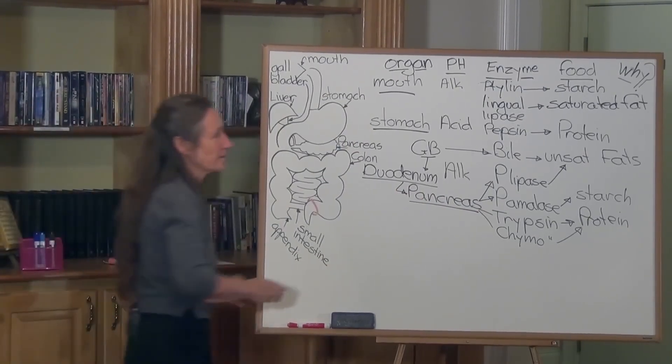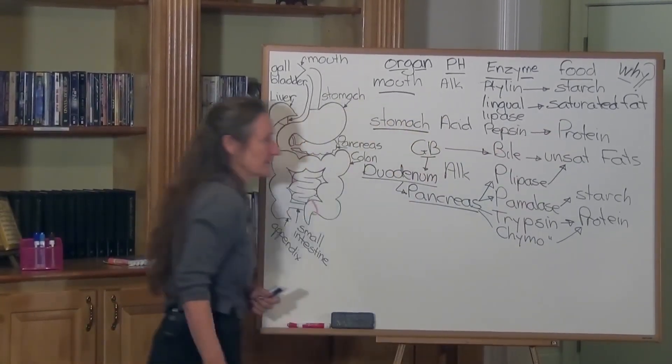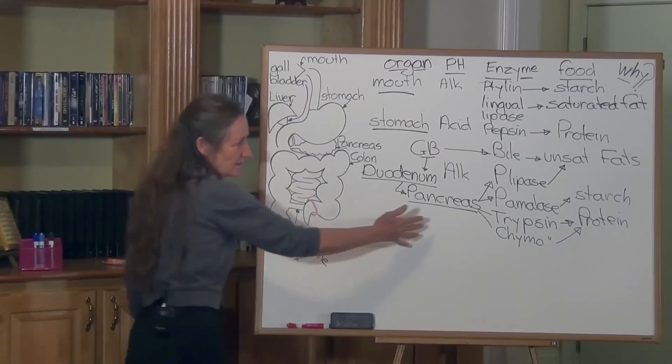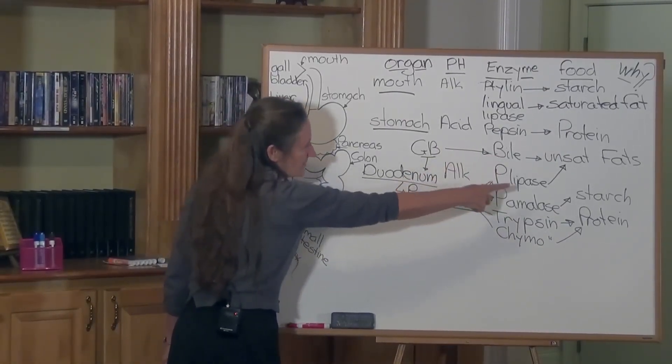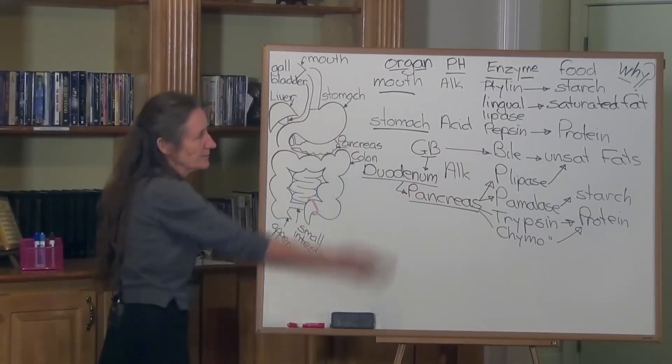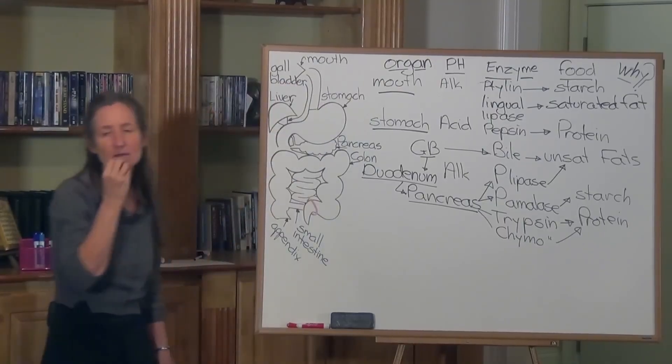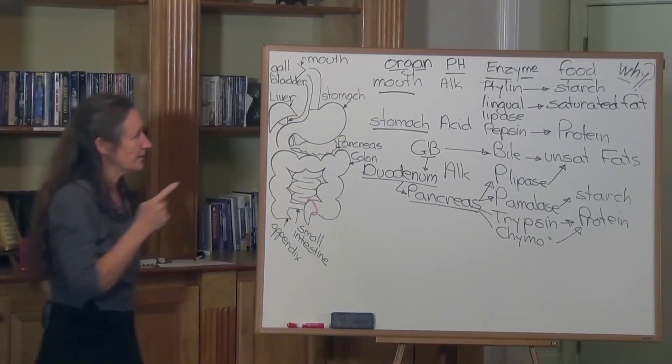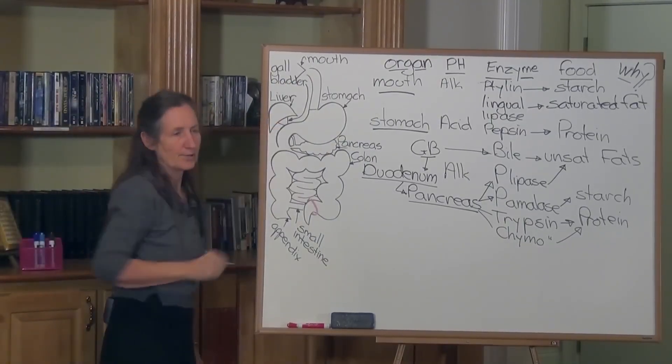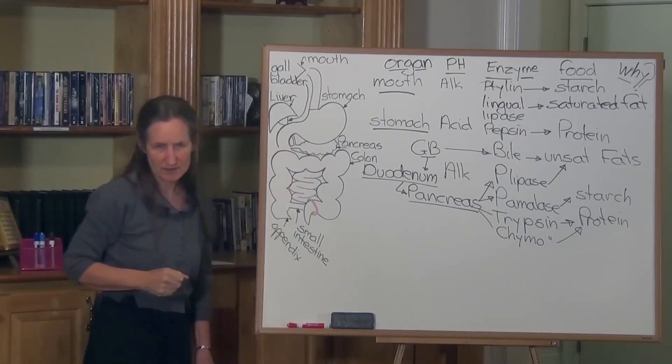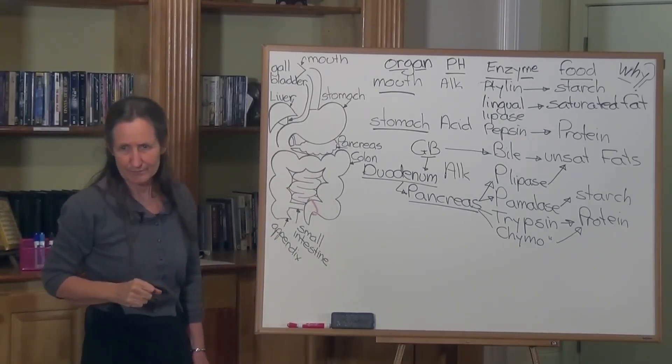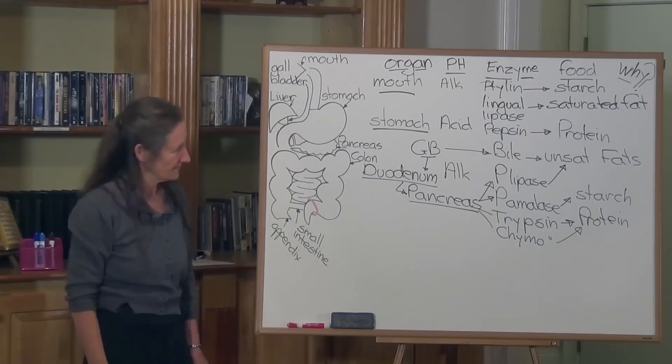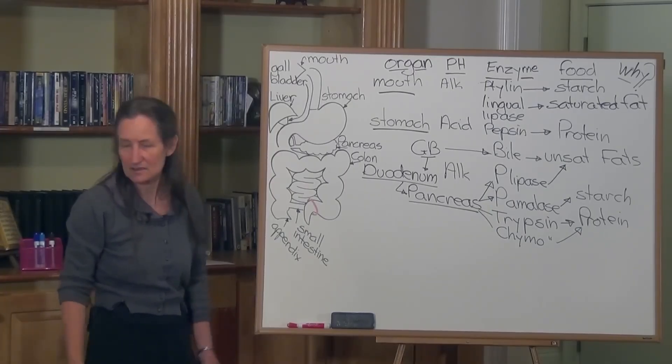Now, one of the great things about saturated fat is it does not need bile, it does not need pancreatic lipase, because the breakdown began in the mouth. So people with liver, gallbladder problems, pancreatic problems, what's the best fat for them? Coconut. Yeah, coconut. It's very easy to digest.